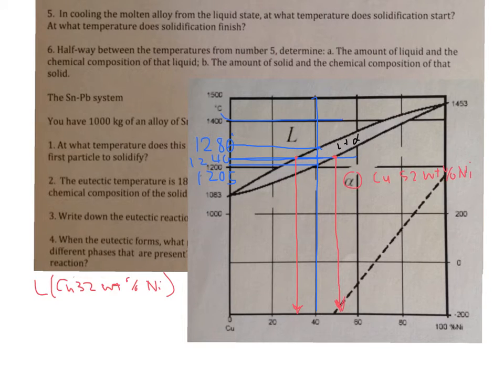And we can use those values as part of our lever with our fulcrum at the original composition of 40 weight percent nickel. And the question is the amount of liquid and the amount of solid. So the chemical composition of the liquid is given here, 32 weight percent nickel. The chemical composition of the solid is here, 52 weight percent nickel.